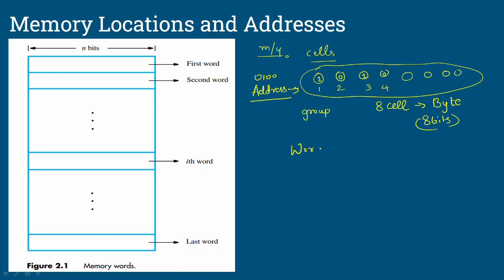Next is the concept of a word. A word is associated with the processor. Word size can be 1 byte, 2 bytes, 3 bytes, or 4 bytes — it can differ from processor to processor. Memory words can be n bits. For example, if you assume a word is 8 bits, then you have the first word, second word, third word, and last word. One-byte addressable memory gives each byte a specific address.